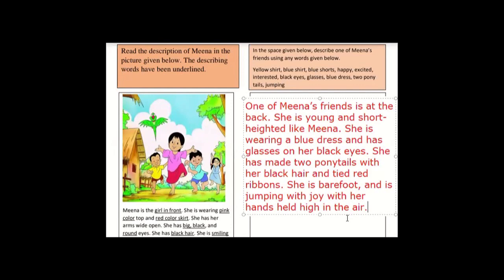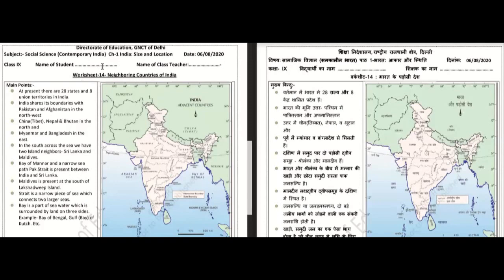After this worksheet, we will go to the Social Science worksheet. This is the Social Science worksheet — Contemporary India, Samkaleen Bharat — worksheet number 14, on neighboring countries of India. The main points in the worksheet: at present, there are 28 states and 8 union territories in India.